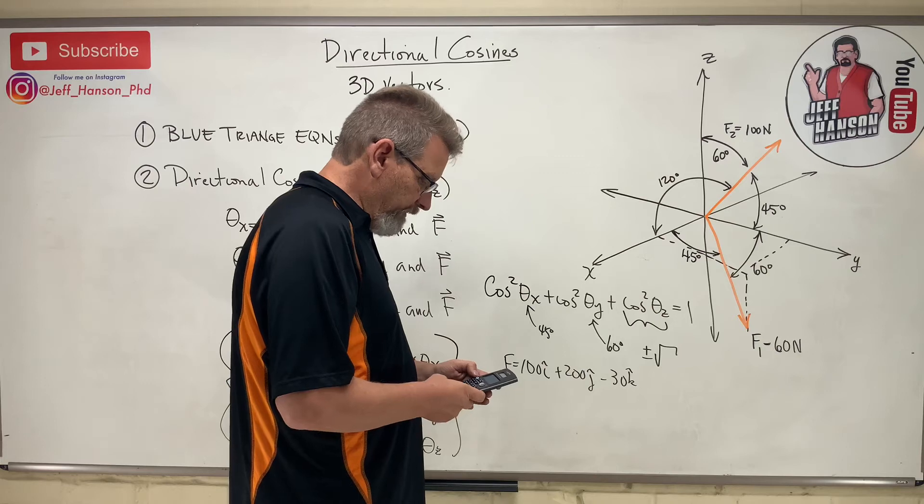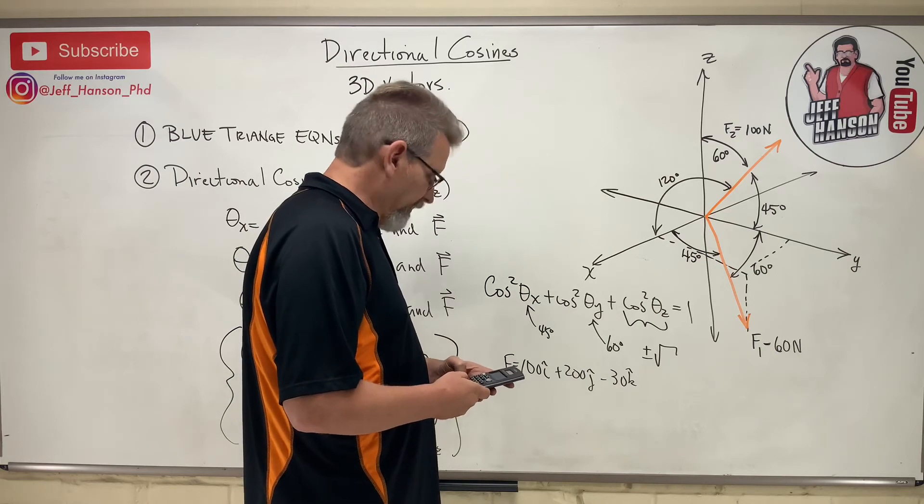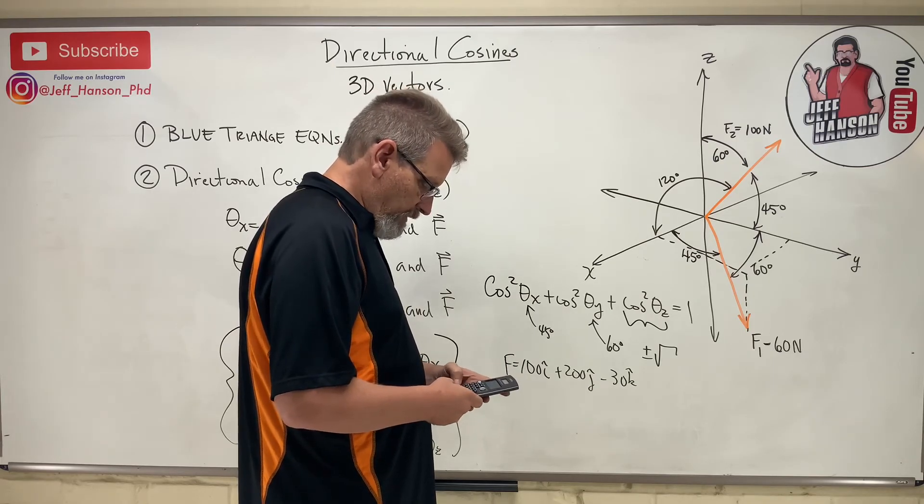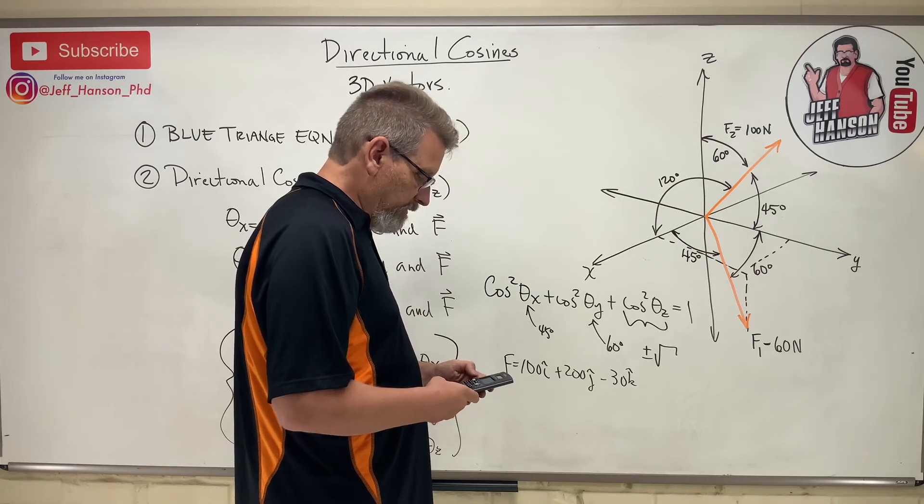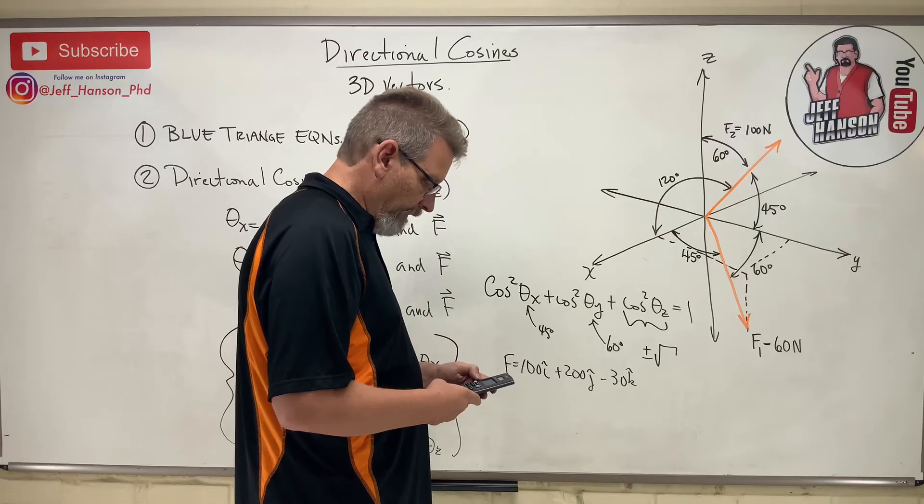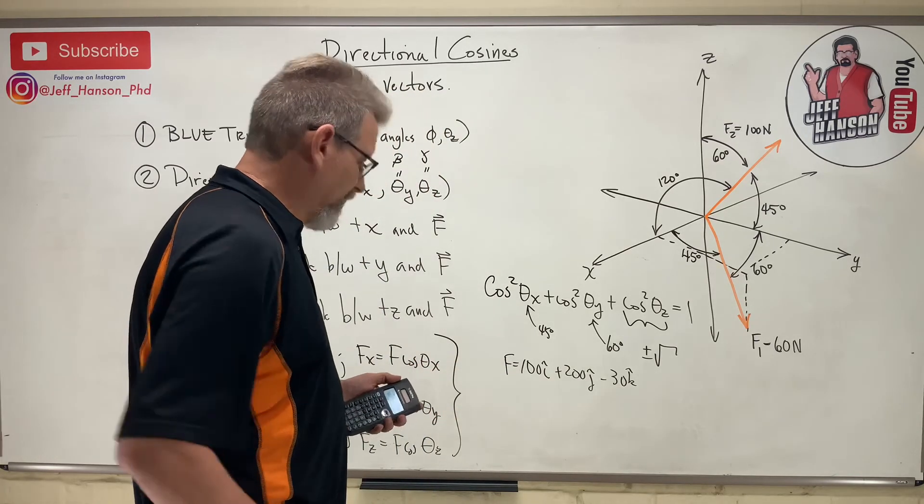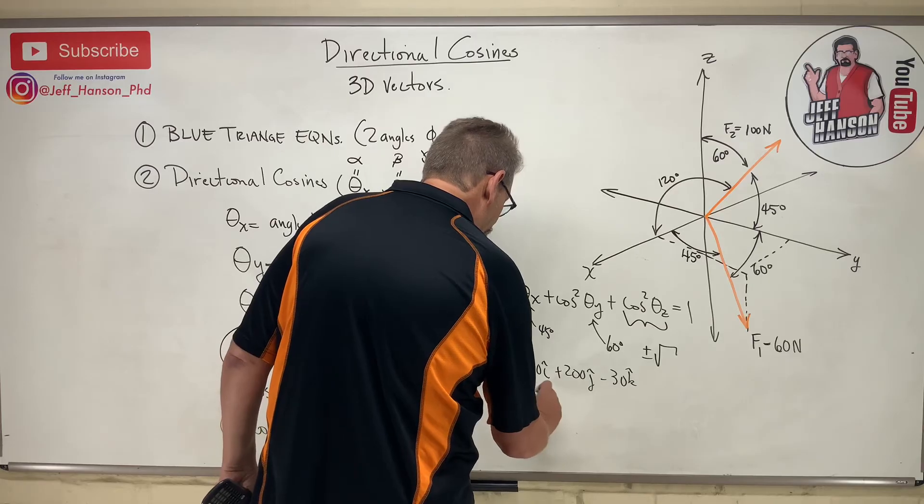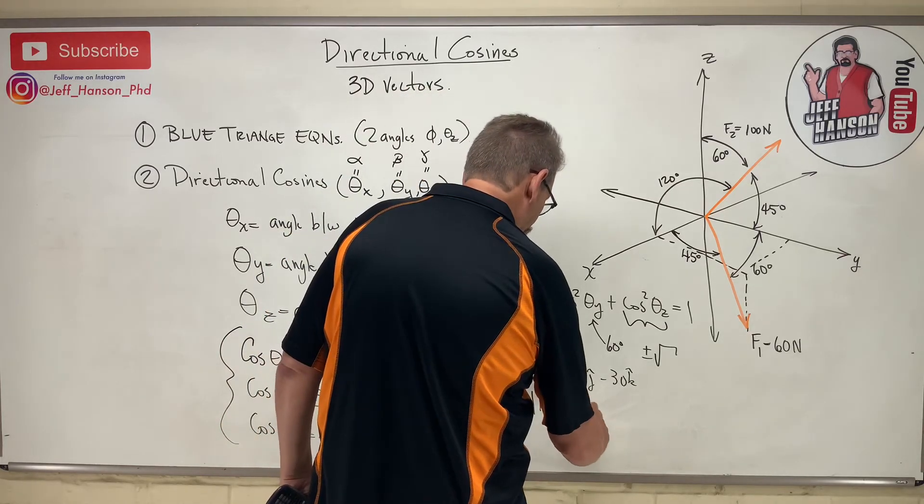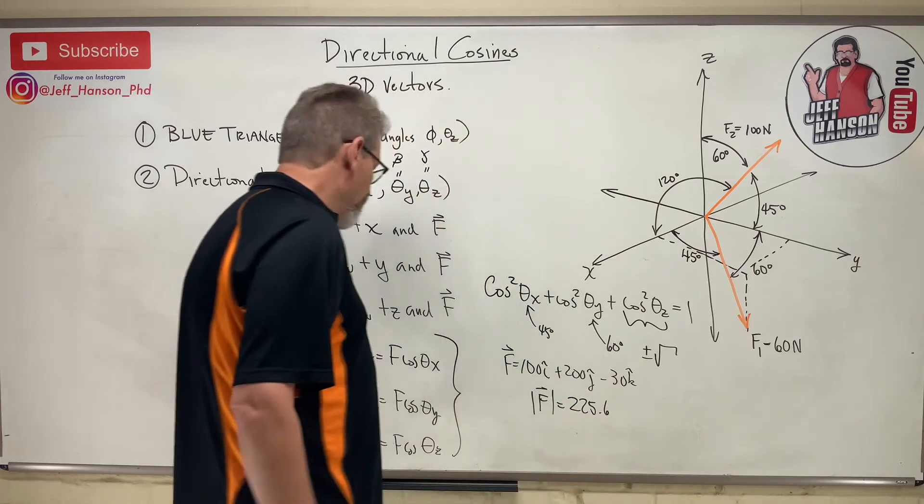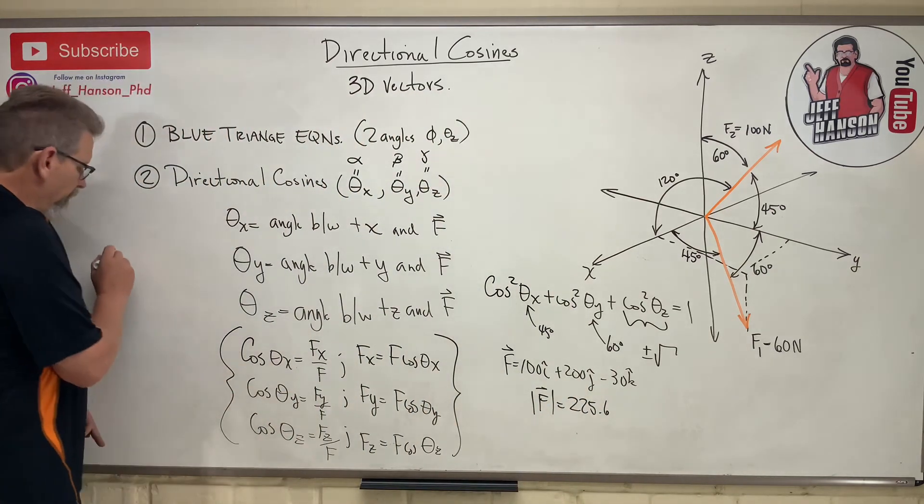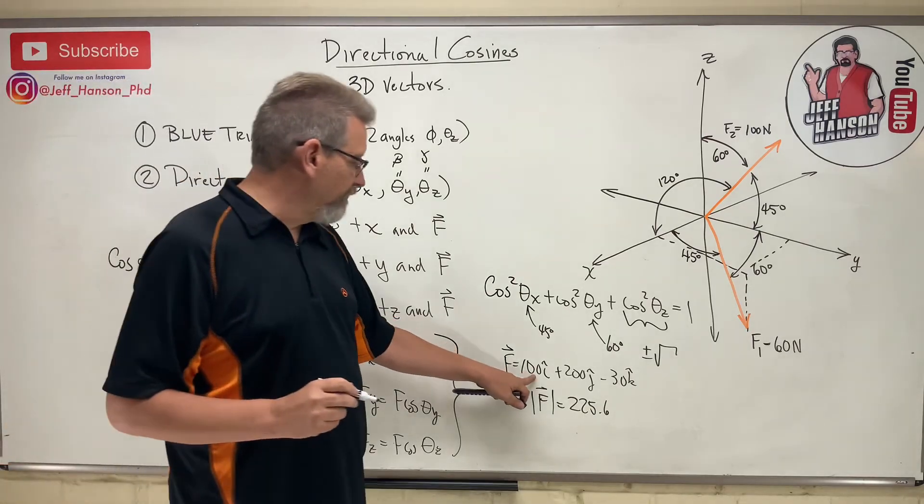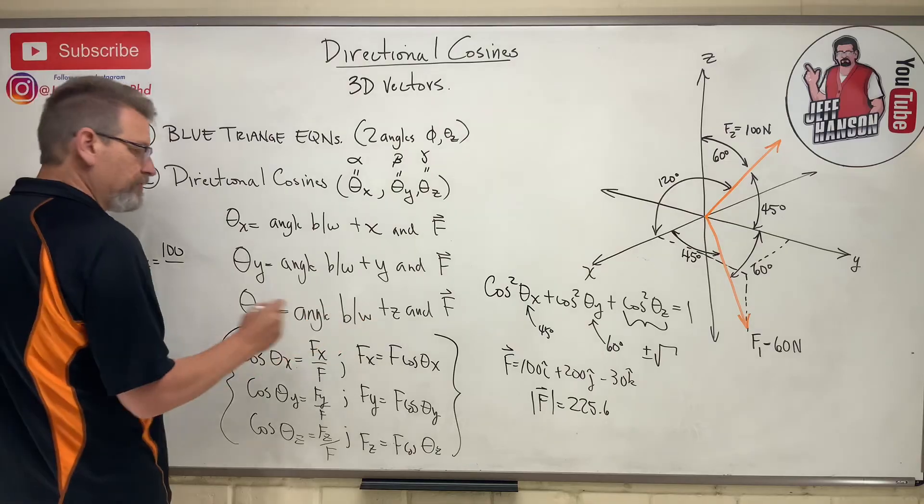So 100 squared plus 200 squared plus 30 squared, square root is 225.6. The magnitude of vector F is 225.6. So how do I find this? Cosine alpha, and I'm not going to use theta x, I'll use alpha, what the heck. Is equal to Fx, what's Fx? There's Fx right there, 100 over F, which is 225.6.